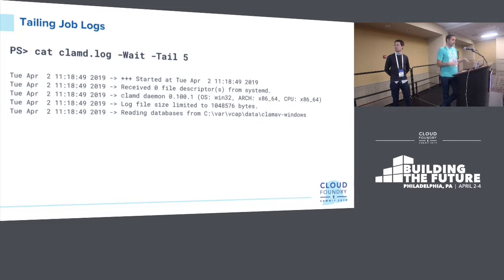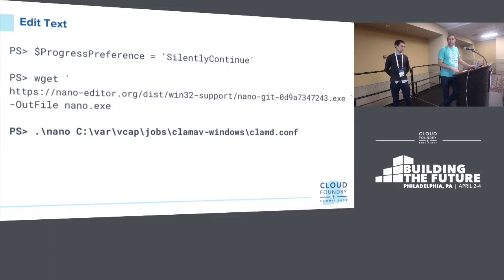You can also follow-tail logs — the Wait command sits there and follows the log as it gets written to, and Tail says just show me the last five entries. Editing text from the command prompt is not possible by default on Windows. Ideally all your changes are in source control, but in case you have to edit, a good workaround is downloading nano — just wget it, run it; it's a single binary. Test-NetConnection is again useful since there's no netcat or telnet installed by default.